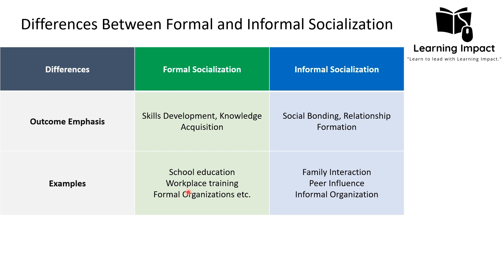Examples of formal socialization include school education, workplace training, and formal organizations. In a formal organization, the process involves several steps: first, an orientation program giving an overview of the organization; then training and development through workshops; then role modeling, where existing members act as role models and share their experience; followed by understanding organizational culture, norms, and behavior; and finally performance evaluation with feedback collection.